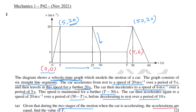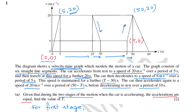This speed of 6 meters per second is maintained for a further t minus 30 seconds. The car then accelerates again to a speed of 20 meters per second over a period of 50 minus t seconds, before decelerating to rest over a final period of 10 seconds.